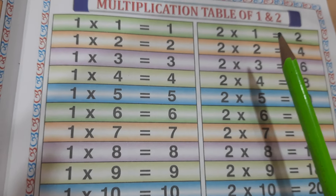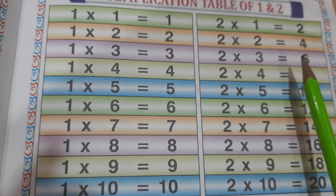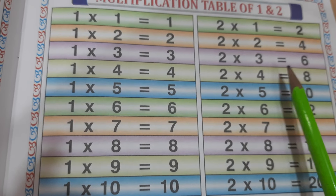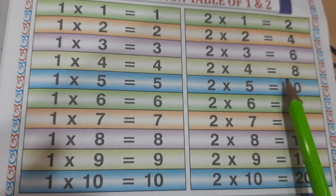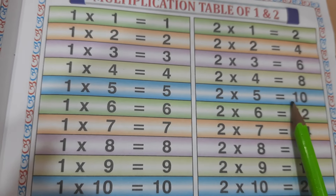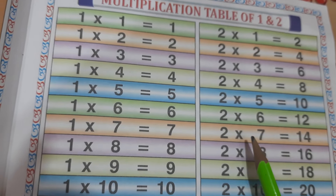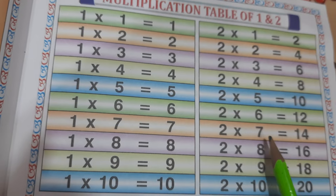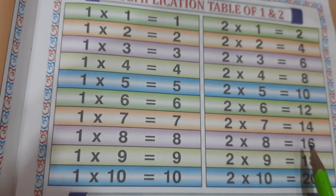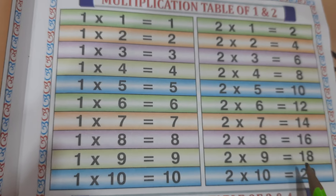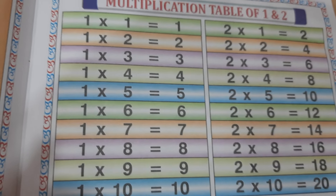2 1s are 2. 2 2s are 4. 2 3s are 6. 2 4s are 8. 2 5s are 10. 2 6s are 12. 2 7s are 14. 2 8s are 16. 2 9s are 18. 2 10s are 20. Thank you.